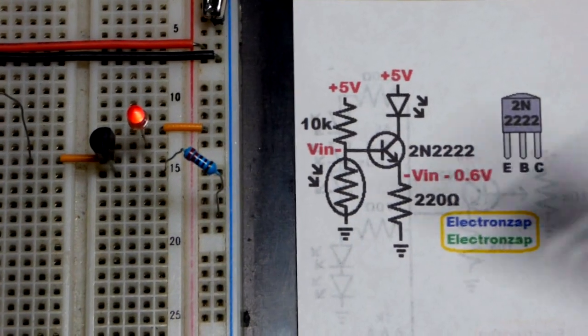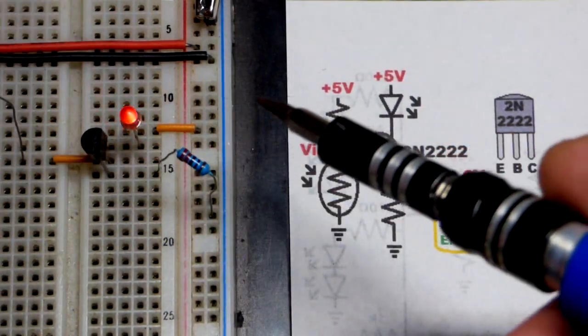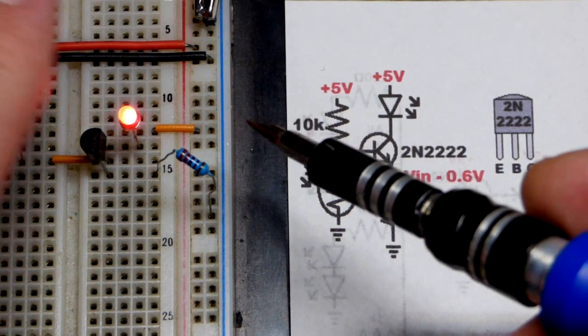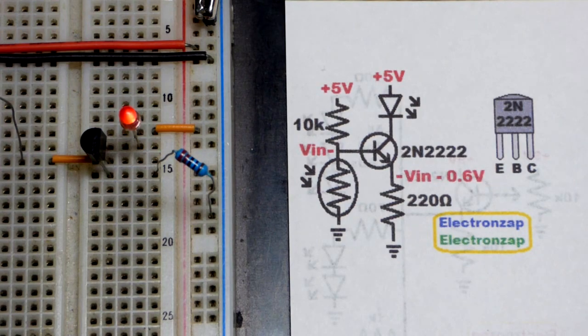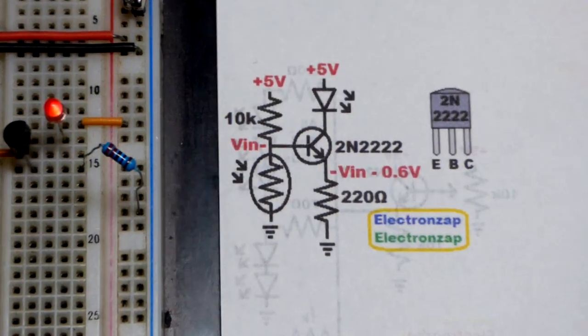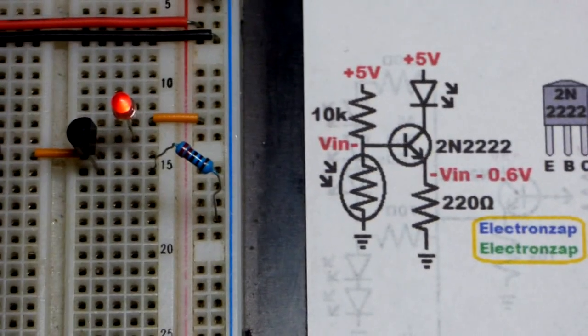You can see the flat side is to the right, so emitter, base, collector. My hand's kind of going over the light dependent resistor, making it darker, and the LED is getting brighter.